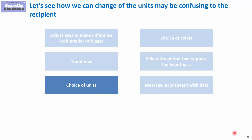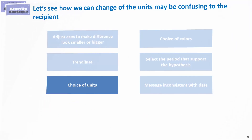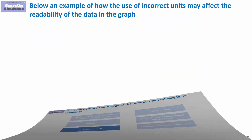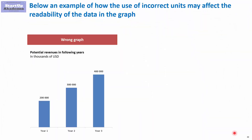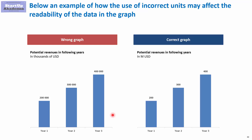Now let's have a look at the choice of units. For example, let's assume that I want to make revenues look bigger. So instead of showing it in millions, I can show it in thousands, and then the numbers look much bigger. In reality, it should probably be shown like this.